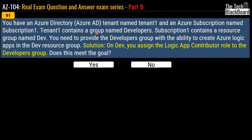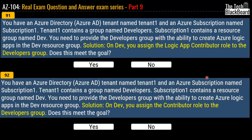Moving to question number 91: you have an Azure Active Directory tenant named Tenant 1 and an Azure subscription named Subscription 1. Tenant 1 contains a group named Developers and Subscription 1 contains a resource group named Dev. You need to provide the Developers group with the ability to create Azure Logic Apps in the Dev resource group. The solution given is that on Dev you assign the Logic App Contributor role to the Developers group. Does this meet the goal? Question 92 is a variation where the solution is to assign the Contributor role to the Developers group on Dev. Does this meet the goal?